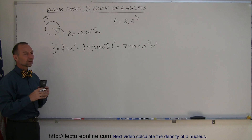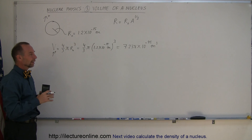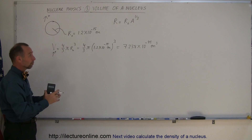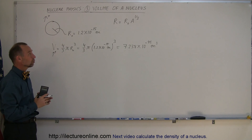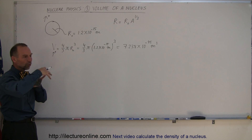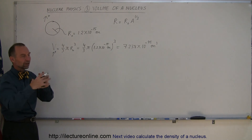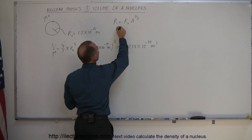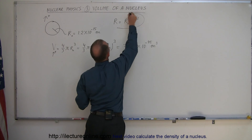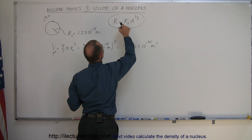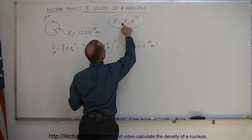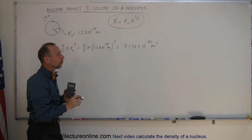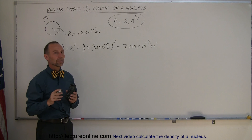If we now take the assumption that a nucleus of an atom is composed of a number of protons and neutrons, and that they all push themselves into a spherical shape, we arrive at the relationship that the radius of any nucleus is equal to the radius of a proton times A to the one-third power.